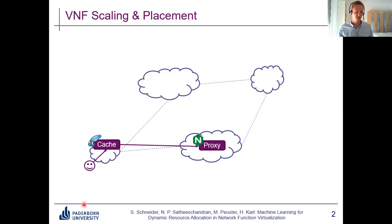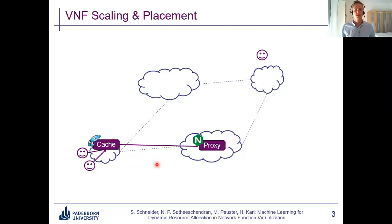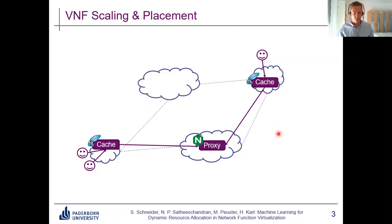For example, here we have a user connected to our running VNFs, and if more users arrive over time we can just assign them to our running instances. Or if they arrive at a new location, we might also want to scale out and start a new instance closer to these new users. The overall goal is first to satisfy user demand — to make sure all users are assigned to their requested VNFs and that these VNFs have enough resources allocated to process the user demands.